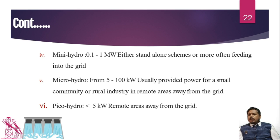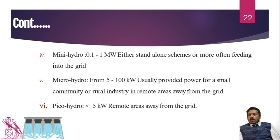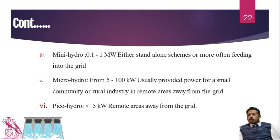Mini hydro power plants are usually used as standalone power plants for fulfilling the needs of some remote region. Next is the micro hydro power plant, where generation is around 5 to 100 kilowatts. This type of small power plant is very helpful in rural areas where population density is very less but water is available. It is not mandatory to connect it to the grid.